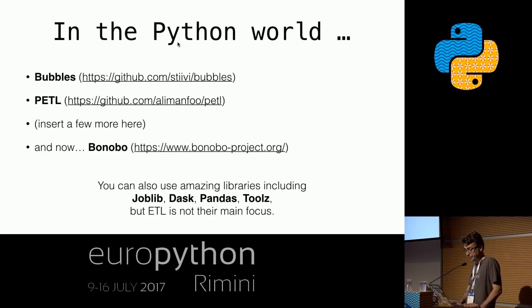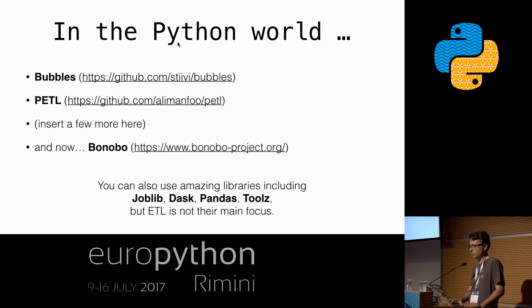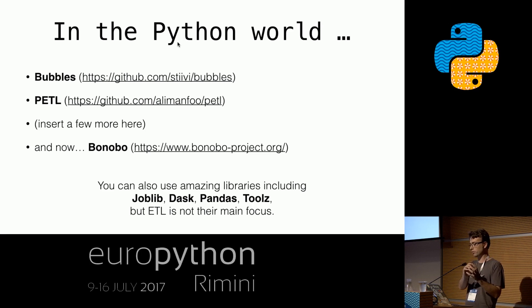In the Python world, there are a few libraries — not exhaustive here. Bubbles is now marked unmaintained. Pitl is more of a fluid interface. Some people told me about METL and Python ETL. But none of these, according to my analysis, were doing the same thing as the Java tools — which is simply connecting independent boxes together using a data flow. So I started to create Bonobo.